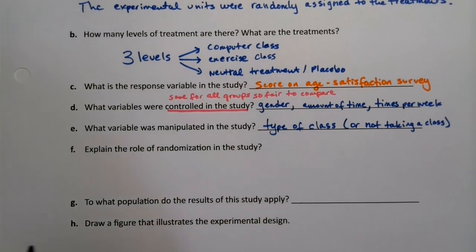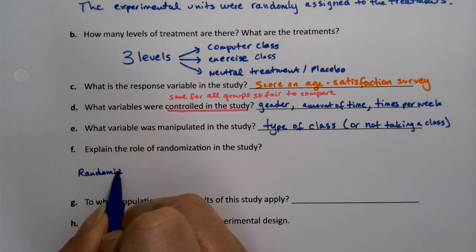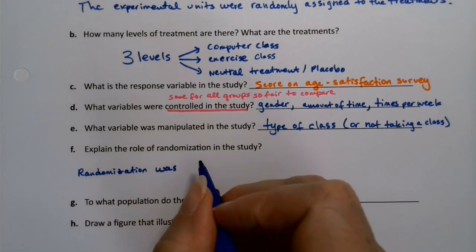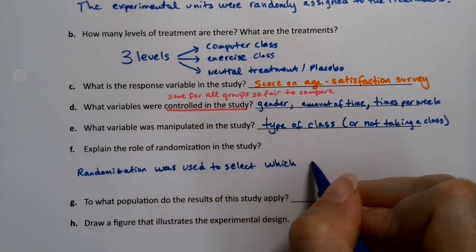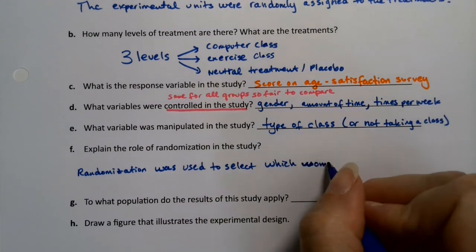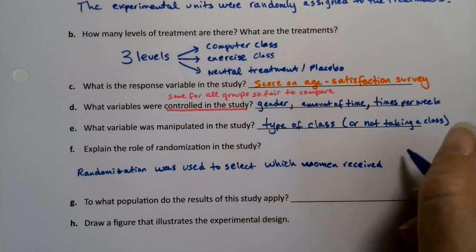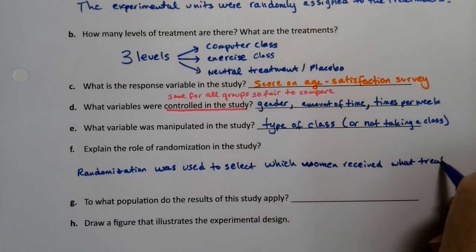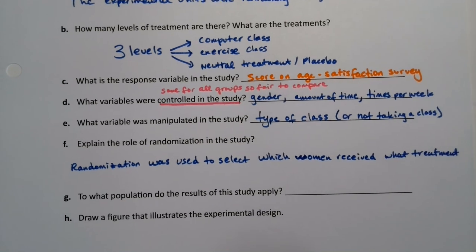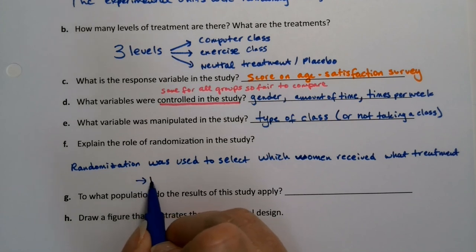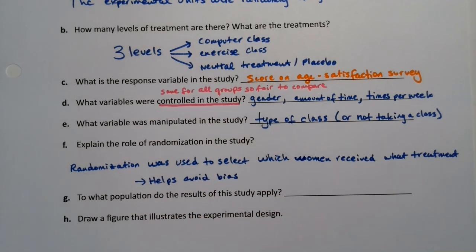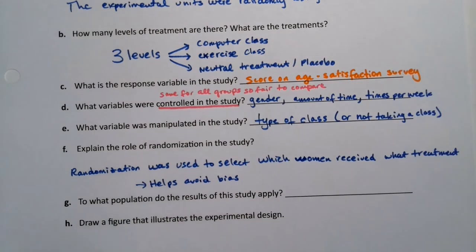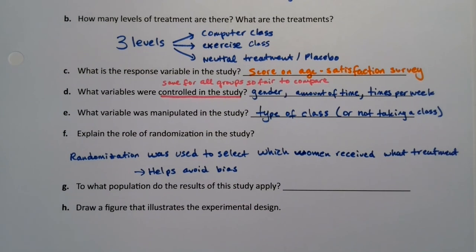All right now what about the role of randomization? Randomization was used to select which women went into which group. So that's how randomization was used in this study. It helps avoid bias because if you let everybody get together with their friends then that's not going to work. So you randomly assign them because otherwise you know a whole crew will go together to the computer class or the whole crew will go together to the exercise class. If they're already friends then maybe that will have an effect on what's going on so if you randomly assign them it helps avoid bias.